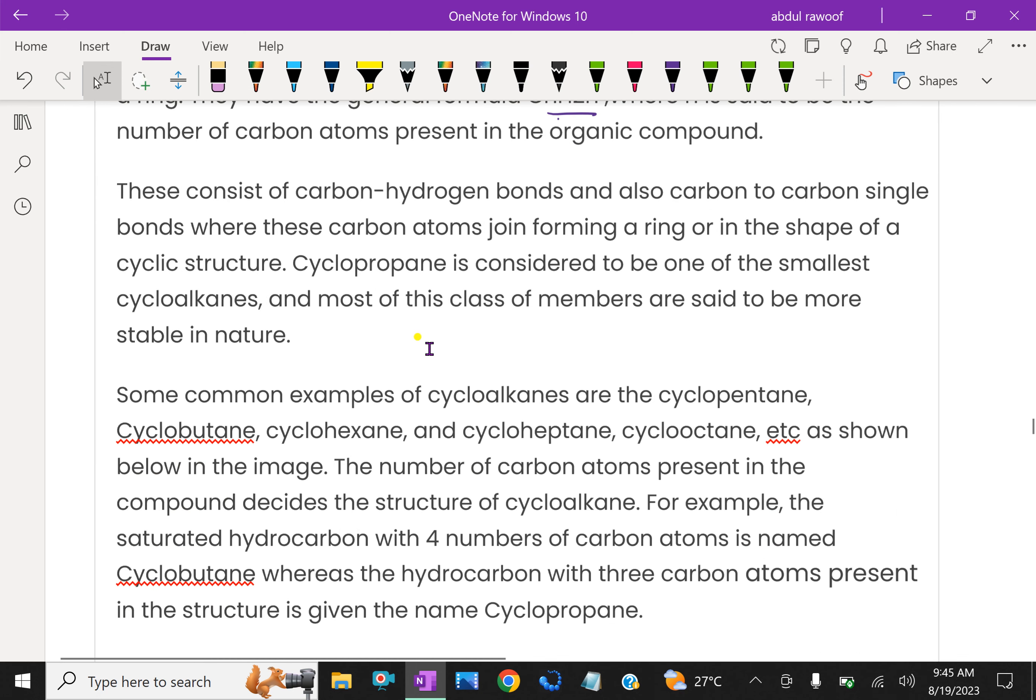This consists of carbon-hydrogen bonds and also carbon-carbon single bonds, where these carbon atoms join forming a ring or in the shape of a cyclic structure.